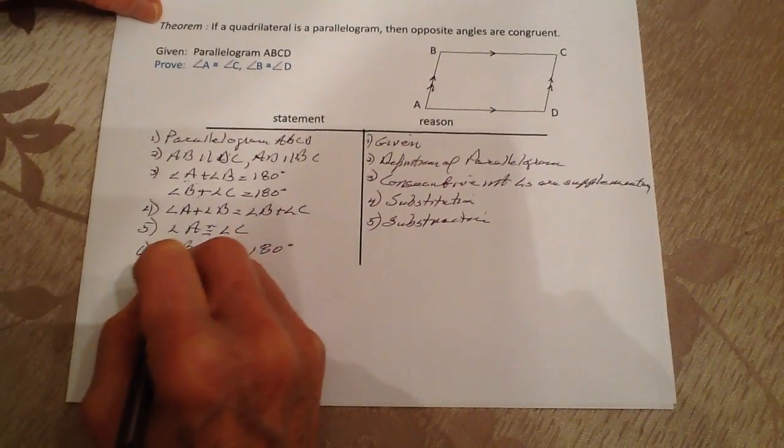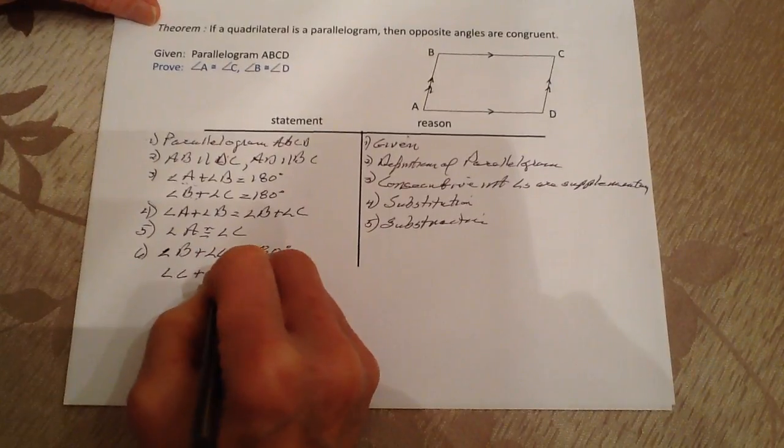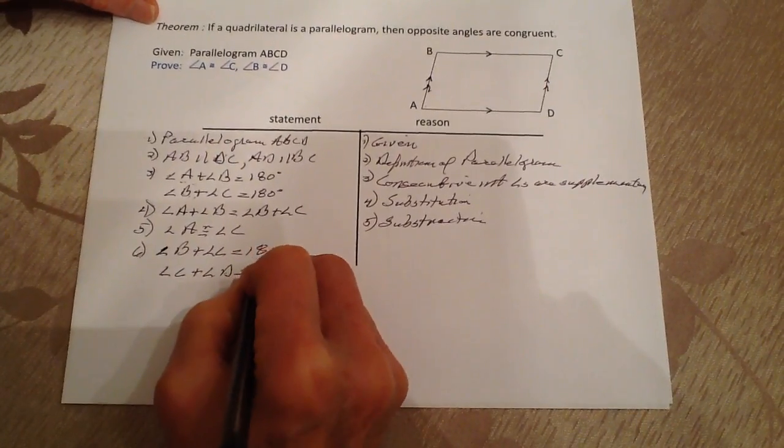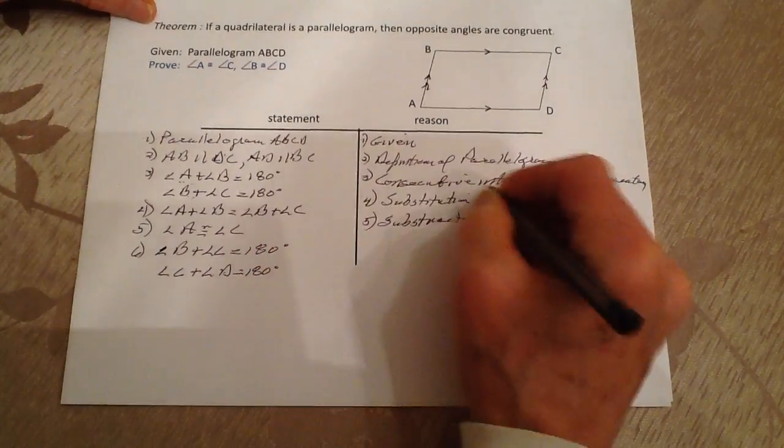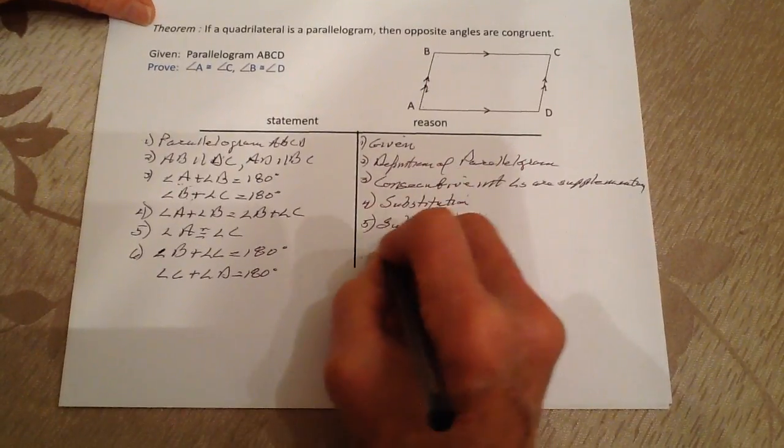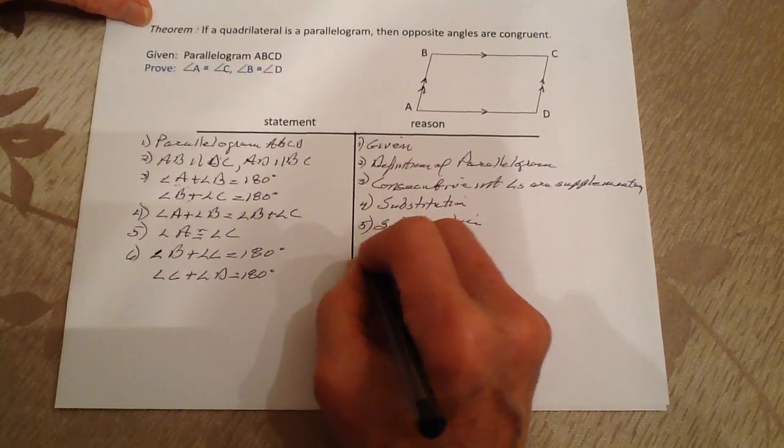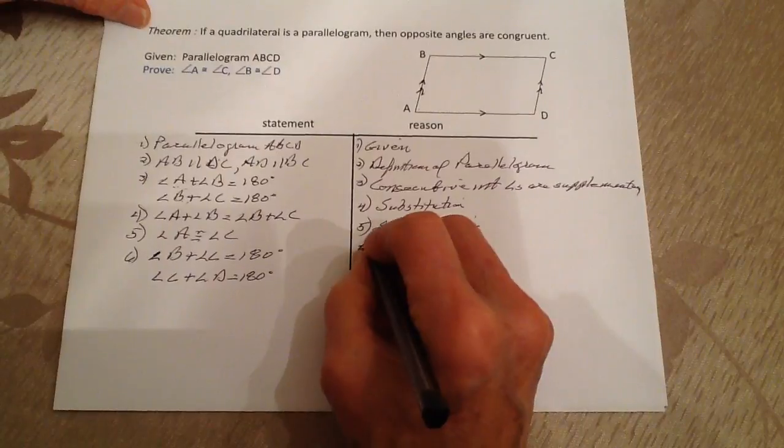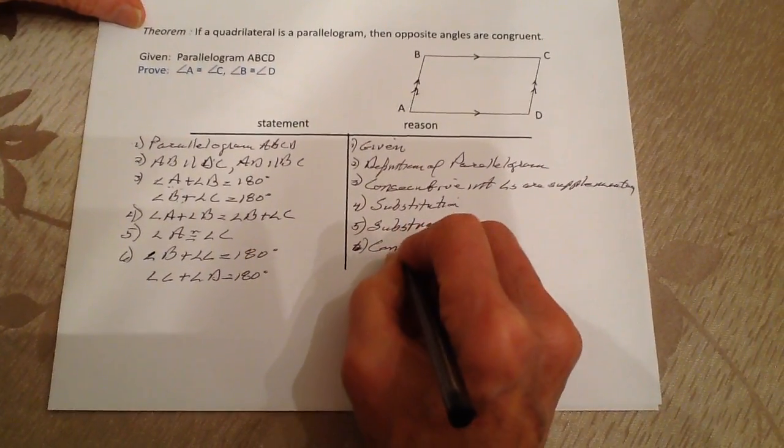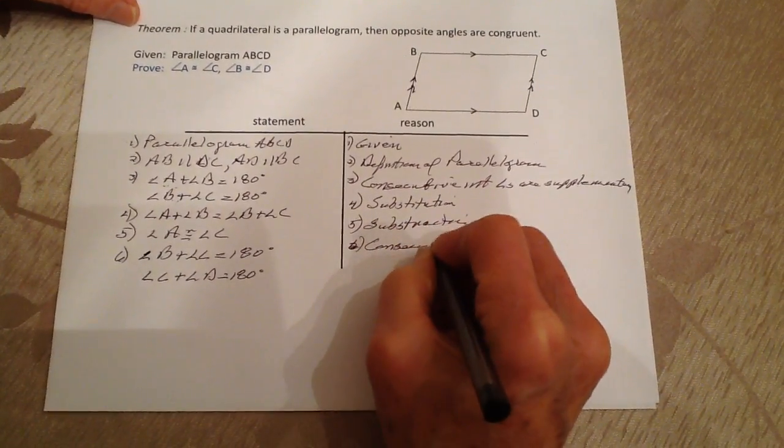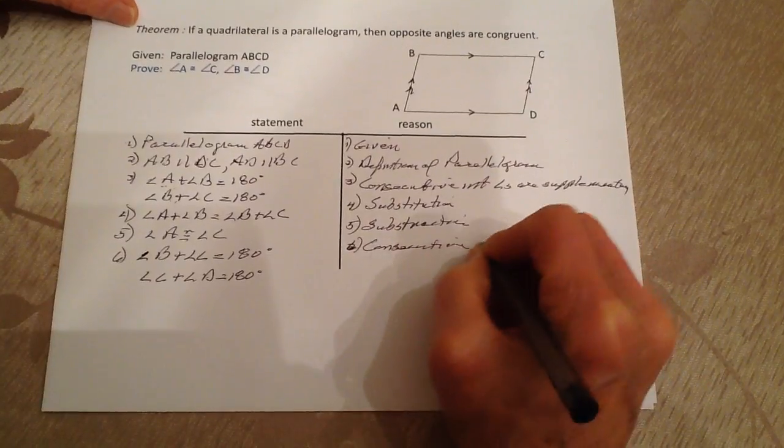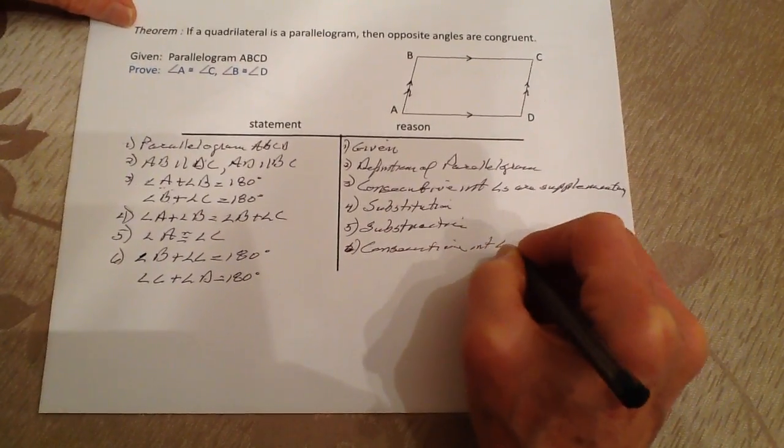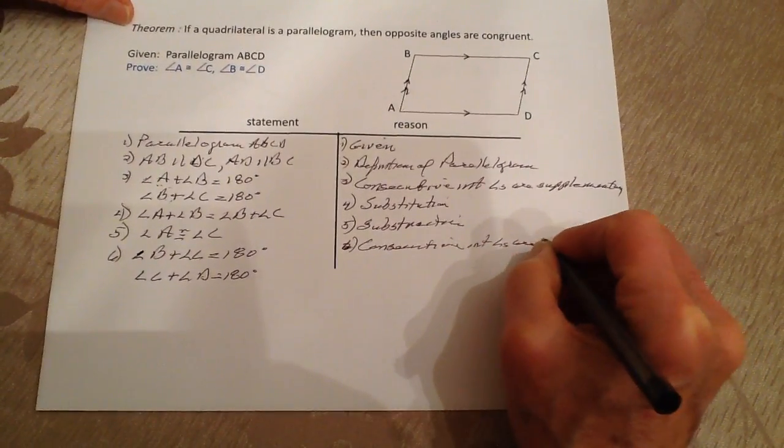Likewise, angle C plus angle D is going to equal 180 degrees. Again, I go back to statement six: the consecutive interior angles are supplementary.